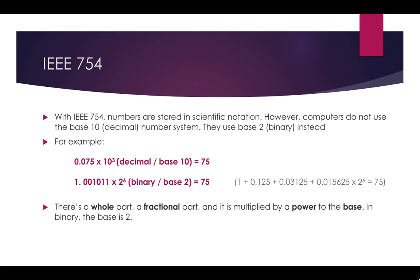Basically that binary number is 1 + 0.125 + 0.03125 + 0.015625, multiplied by 2⁶, which equals 75 in decimal. Notice that the base is 2 because it's a binary number, whereas in the first decimal example the base is 10. There's a whole part, a fractional part, and it's multiplied by a power to the base — and in binary the base is 2.